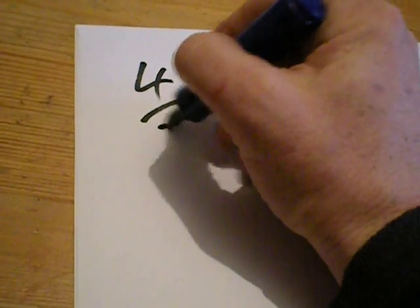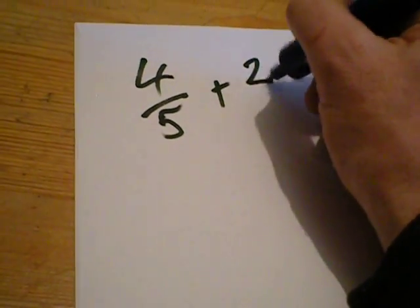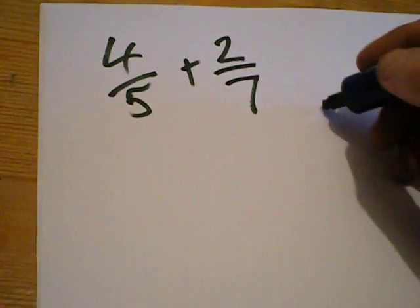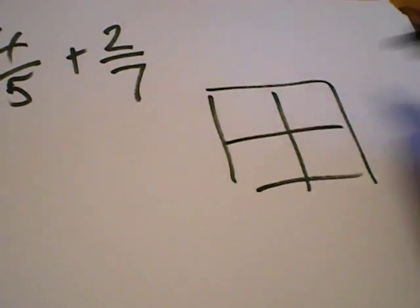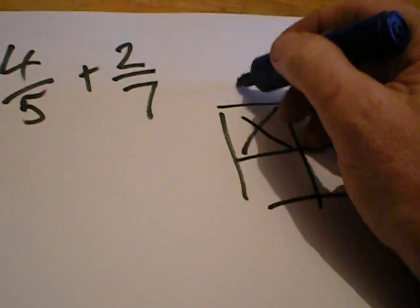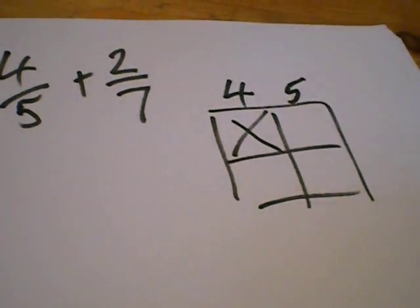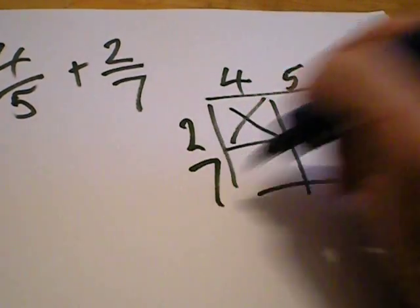Let's try another one shall we? Say four over five plus two over seven. So start again, draw a box like this, a cross there. One at the fraction of the top, doesn't really matter which way. And then two and seven.